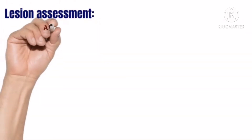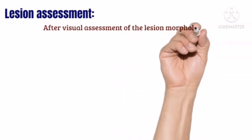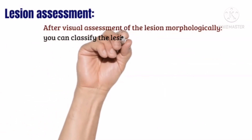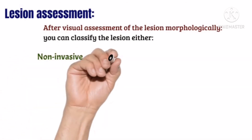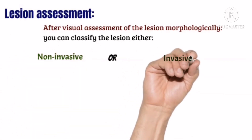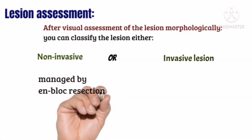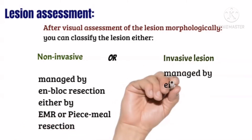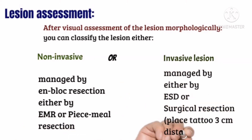After visual assessment of colonic lesions, we can classify them as either non-invasive or invasive. Non-invasive lesions are managed by endoscopic mucosal resection or piecemeal mucosal resection. Invasive lesions are managed by endoscopic submucosal resection or surgical resection after tattooing 3 cm below the distal end of the lesion.